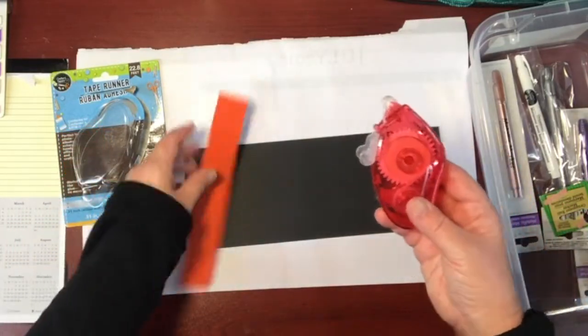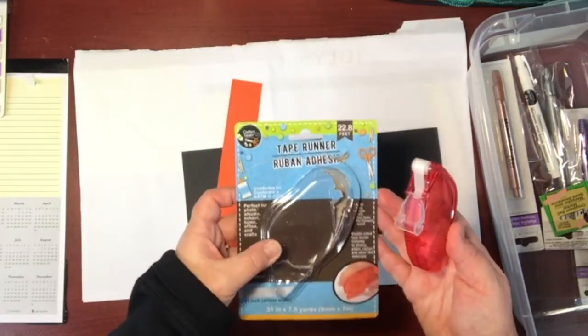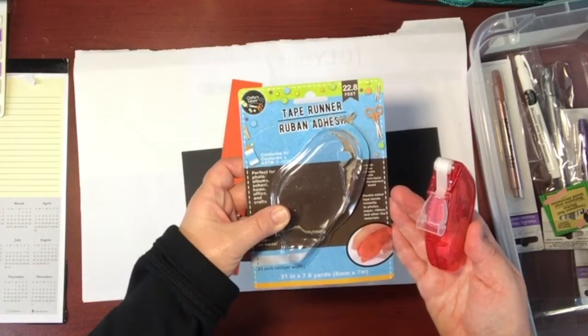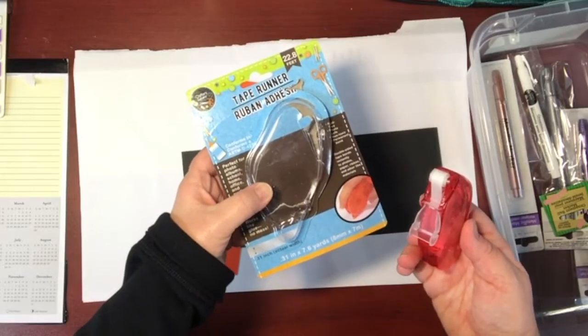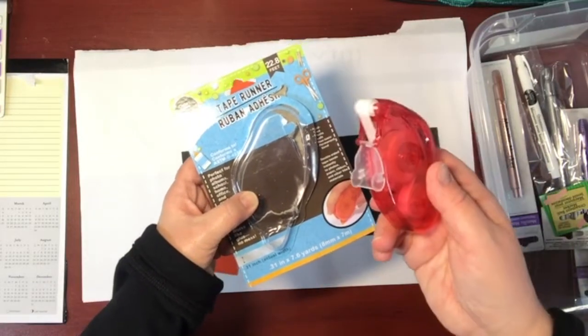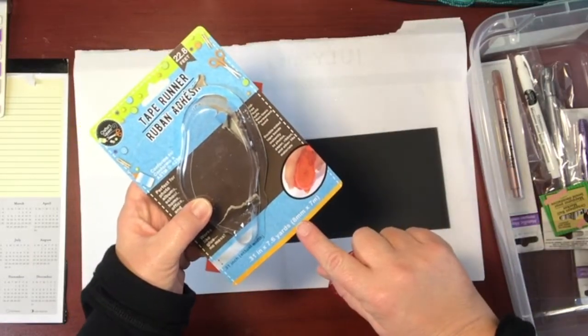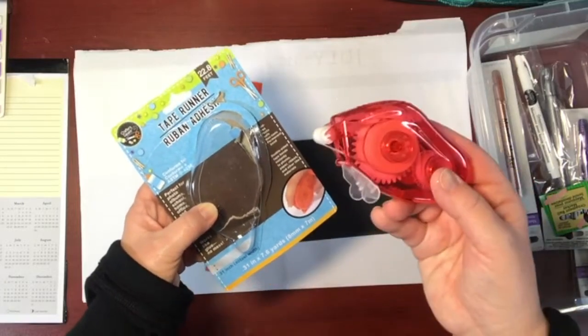So right now I'm going to test out the tape runner, the Crafter Square 22.8 feet runner. It is 0.31 inches of width. It measures 7.6 yards in here or in the metric it is eight millimeters wide and there are seven meters of length in here.